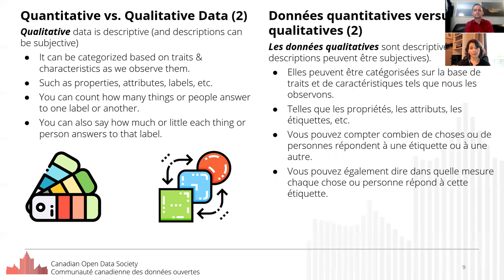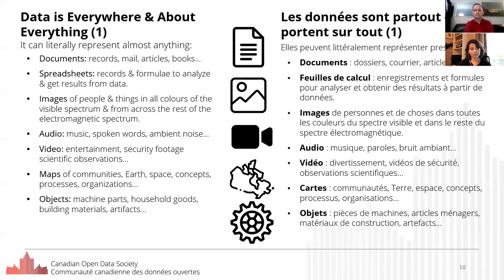Les données peuvent être qualitatives aussi, pour décrire les qualités comme la couleur, la forme, l'origine, etc. Ces qualités peuvent être mesurées sur une échelle ou un spectre. As you can see from this slide, data literally can describe and record everything in our world down to the nth degree, except maybe the soul. Les données sont partout et les données portent sur tout. Elles décrivent tout ce qui se passe dans le monde jusqu'aux plus petits détails.